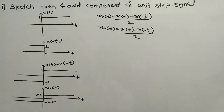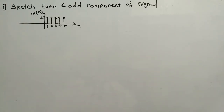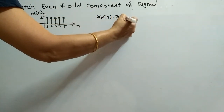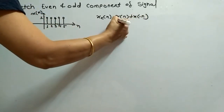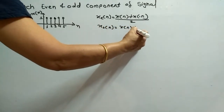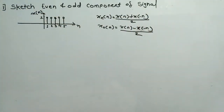This is the even and odd component for the unit step signal. Now I will cover one more example using a discrete-time signal. This is the given DT signal, and we want to calculate its even and odd components. First we write the formulas: X_E(N) = [X(N) + X(-N)] / 2, and X_O(N) = [X(N) - X(-N)] / 2.